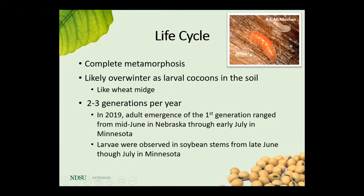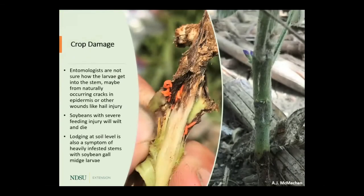In 2019, first adult emergence in the south was around mid-June, working toward early July as you came further north — parts of Minnesota saw emergence around the 4th of July. Larvae were being observed in soybean stems in Minnesota from the end of June into July. One interesting question still not well understood: how does the larva get into the stem? Some ideas being tossed around include naturally occurring cracks in the lower part of the stem, or wounds from events like hail injury, which is still being observed and evaluated.